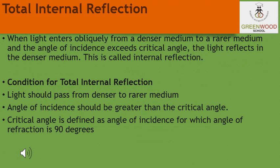Now let us discuss total internal reflection and its various phenomena. Total internal reflection occurs when light enters obliquely from a denser medium to a rarer medium and the angle of incidence exceeds the critical angle, causing the light to reflect back into the denser medium. The conditions necessary for total internal reflection are: the light should travel from a denser to a rarer medium, and the angle of incidence should be greater than the critical angle.